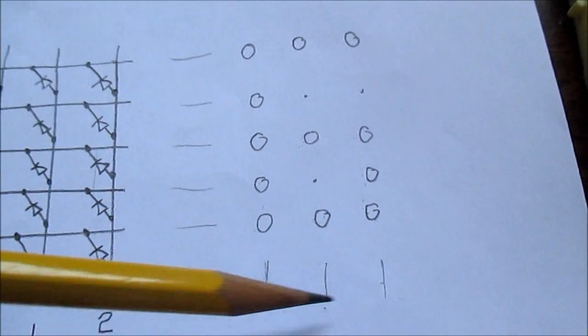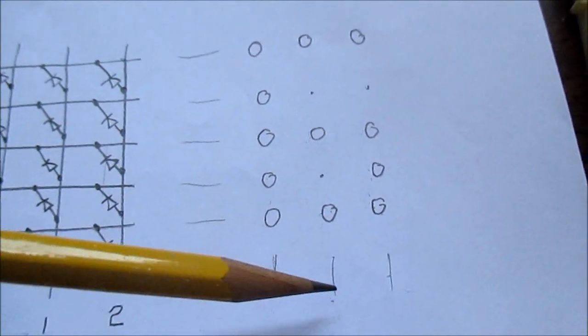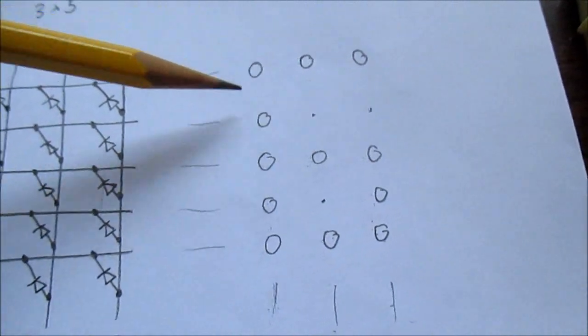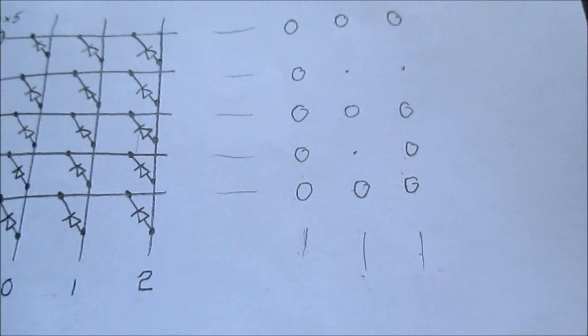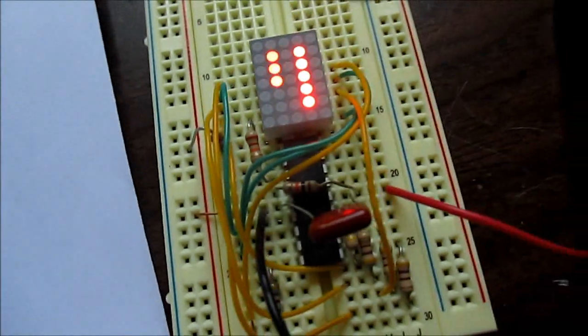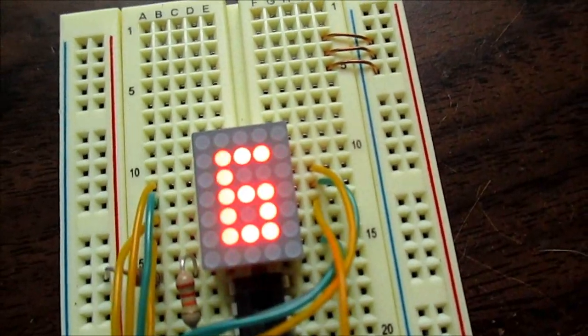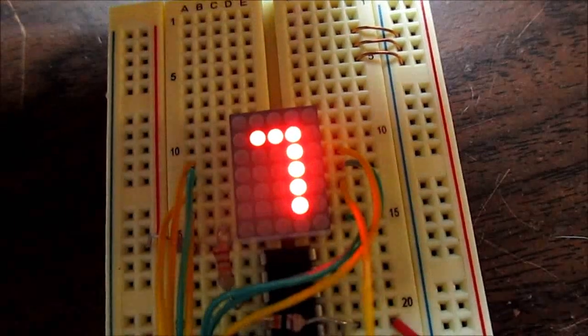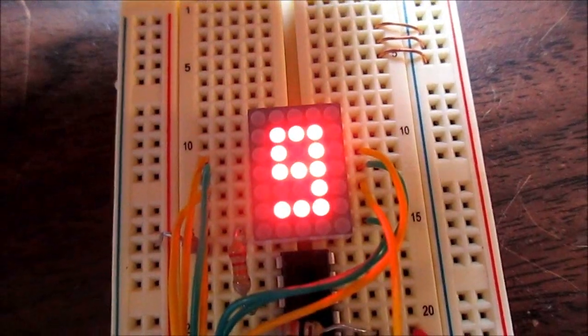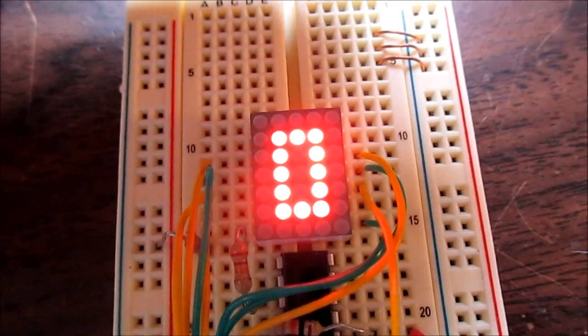And again, that scrolls real fast or strobes through real fast, and you see the number 6 displayed. There it is coming around. I'm going to block that so it looks solid. So that's what's going on there in a nutshell.